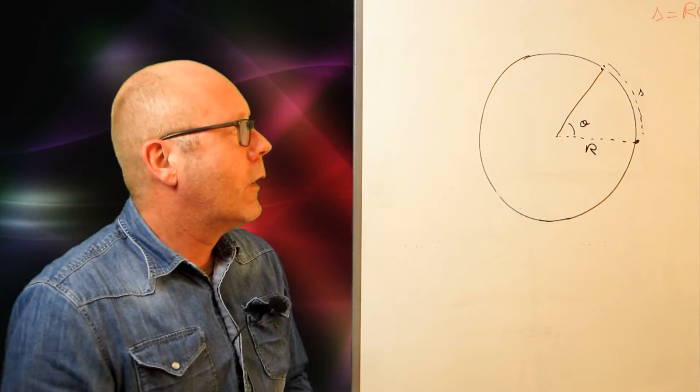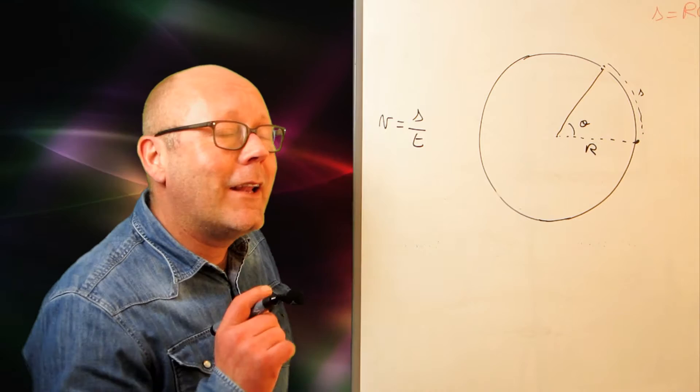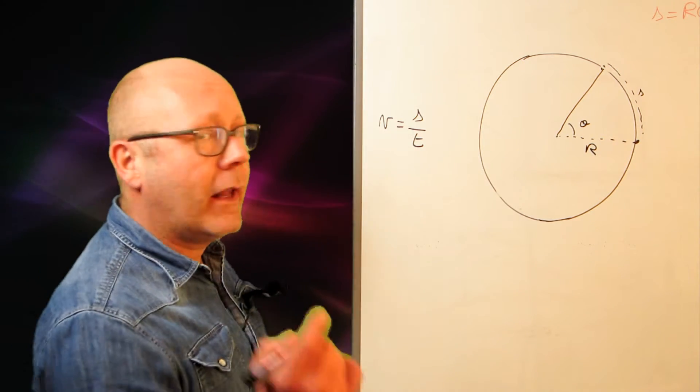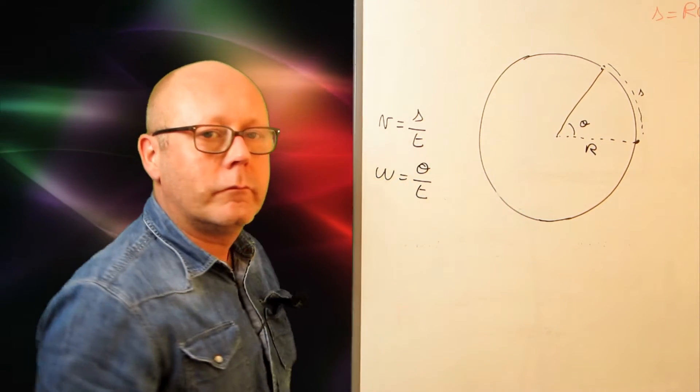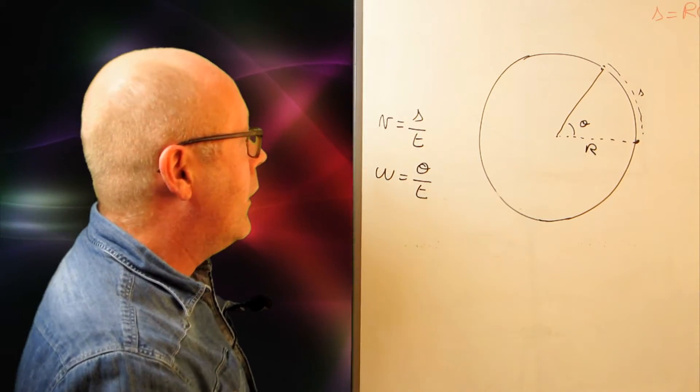Suppose now that I cover this distance S in a time t. I could therefore calculate the linear velocity V. It would be equal to S on t. I can also calculate what is called the angular velocity. The amount of angles swept per unit time. And that is called omega. That's an interesting one. A very interesting and important formula.